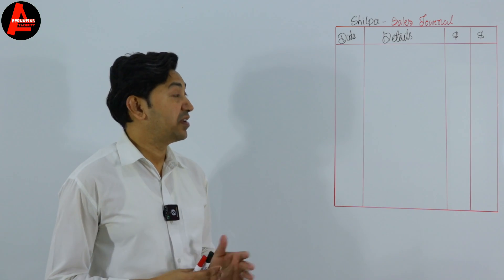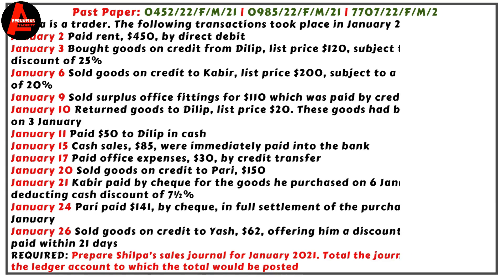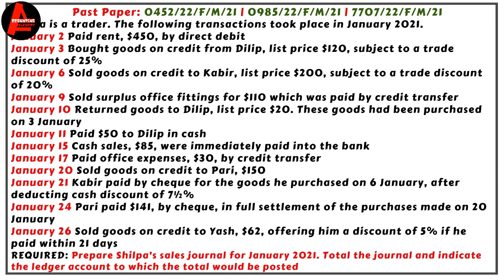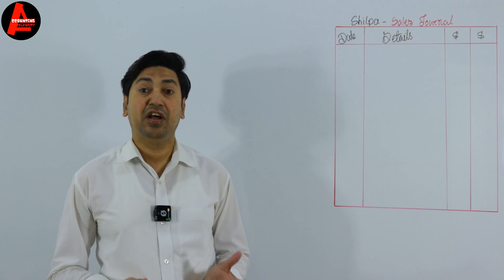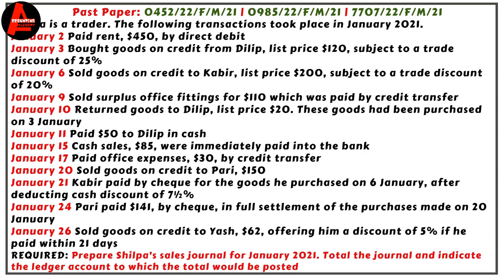I'll show you step by step how to prepare this account. Shilpa is a trader, and the following transactions took place in January 2021. There are many transactions listed, but not all are related to the sales journal — some are cashbook-related transactions. In the next tutorial I'll show you how to prepare the cashbook from the same transactions. Only three transactions here are relevant: January 6, sold goods on credit; January 20, sold goods on credit; and January 26, sold goods on credit.